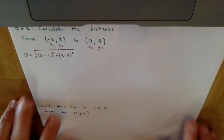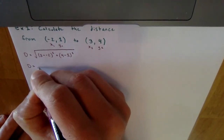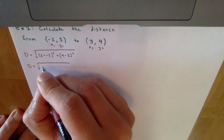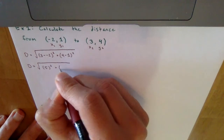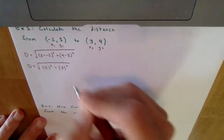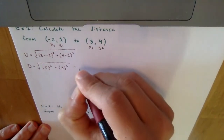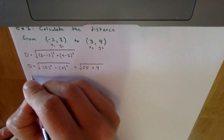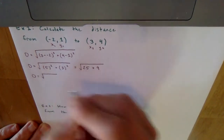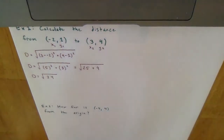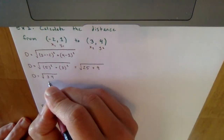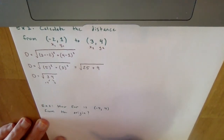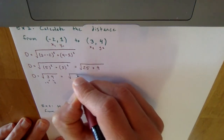Simplifying: 3 minus negative 2 becomes 3 plus 2, which is 5, squared; plus 4 minus 1, which is 3, squared. That gives us the square root of 5 squared (25) plus 3 squared (9), so the square root of 34. Since 34 is not a perfect square and factors as 17 times 2 with no pairs, we leave it as the square root of 34.